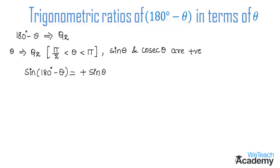Now let us consider cosine. For cos of 180 degrees minus theta: cosine is negative in the second quadrant, so we get a negative result. Since 180 is an even multiple, cosine remains cosine. Therefore, cos of 180 degrees minus theta equals minus cos theta.